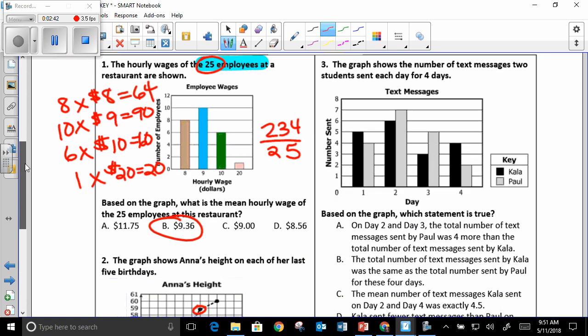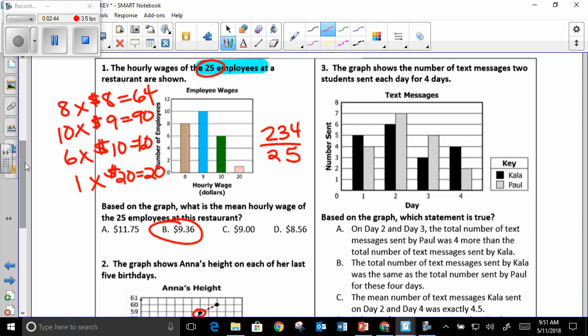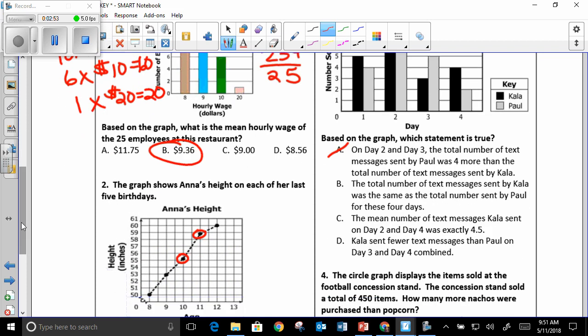Number three, the graph shows the number of text messages to students sent each day for four days. It cannot be A. The correct answer is B. The total number of text messages sent by Kayla was the same as the total number sent by Paul for these four days.